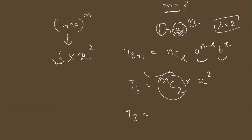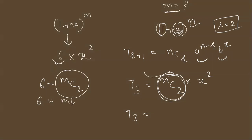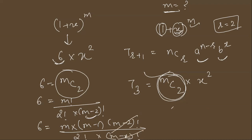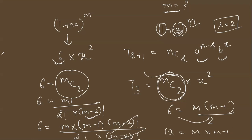The coefficient is given as 6, so we set 6 = mC2. Expanding the combination formula: mC2 = m! / (2! · (m-2)!). Opening m factorial up to m-2, we get m · (m-1) · (m-2)! divided by (m-2)!, which cancels. So 6 = m(m-1) / 2, giving us 12 = m(m-1).